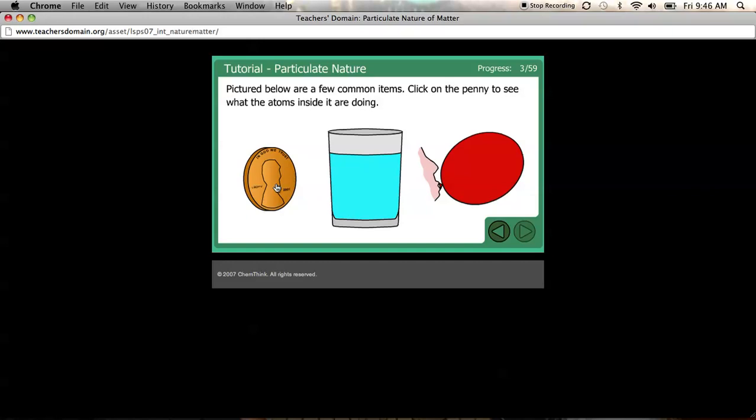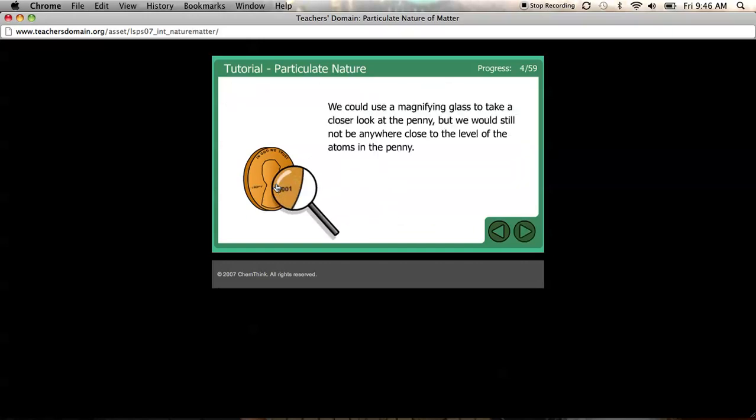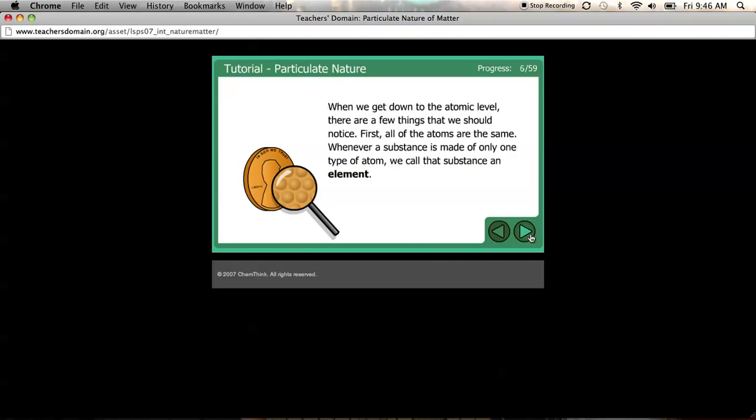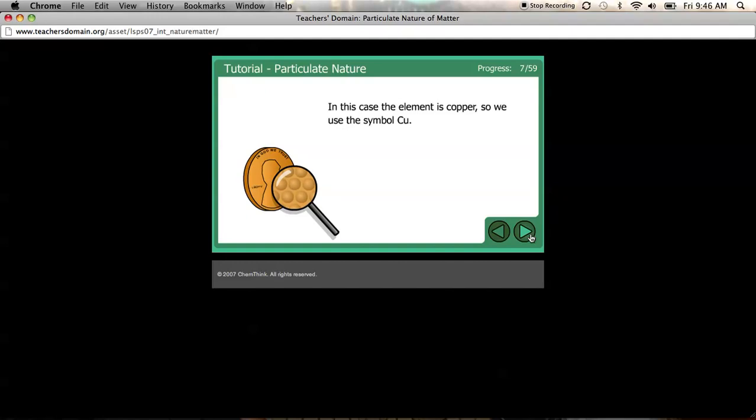So we're going to start with the penny. So if we zoom in on a penny with like a magnifying glass, you're not going to get very close to an atom. But if you keep going, if you could turn your magnifying glass into an atomic level magnifier, you could take a look at what the atoms are doing. So here we go. We're going to zoom in. And you can see down at the atomic level, all those atoms are the same, right? Okay, so whenever a substance is made of only one type of atom, it's called an element. In this case, it's apparently an old penny, and it's made of copper.